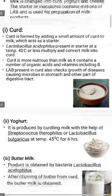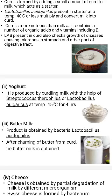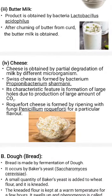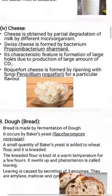Another dairy product is yogurt, developed by bacteria Streptococcus thermophilus or Lactobacillus bulgaricus. Buttermilk is another milk product produced by Lactobacillus acidophilus. Another important dairy product is cheese. There are two types: Swiss cheese and Roquefort cheese. Swiss cheese is formed by Propionibacterium shermanii, where the bacteria produce carbon dioxide gas forming large holes. Roquefort cheese is formed by the fungus Penicillium roqueforti, which is highly nutritious and tasty.